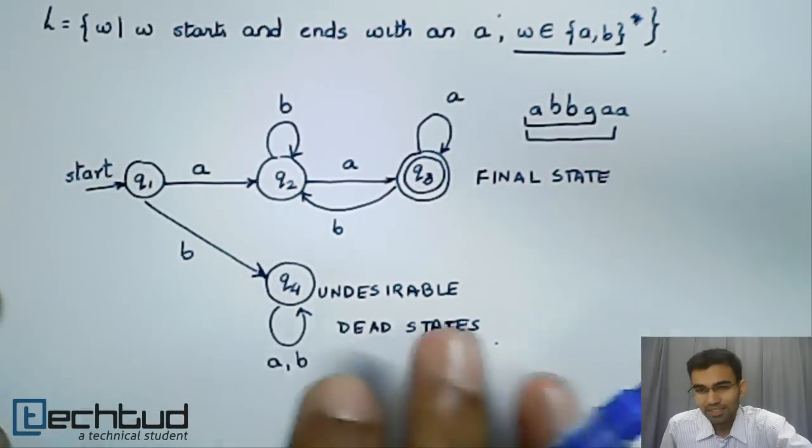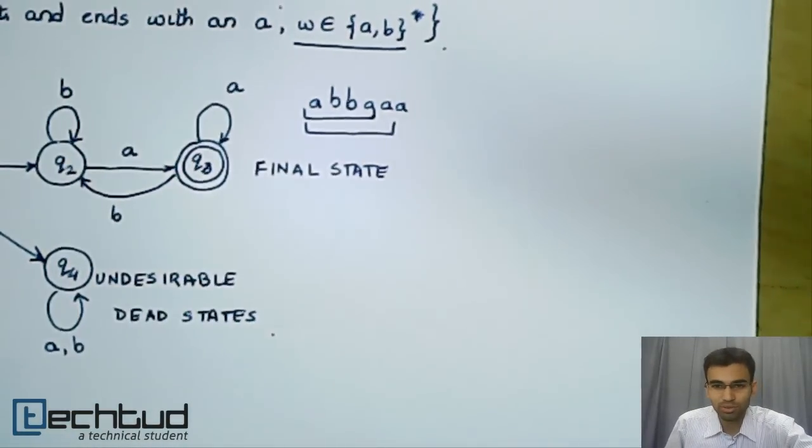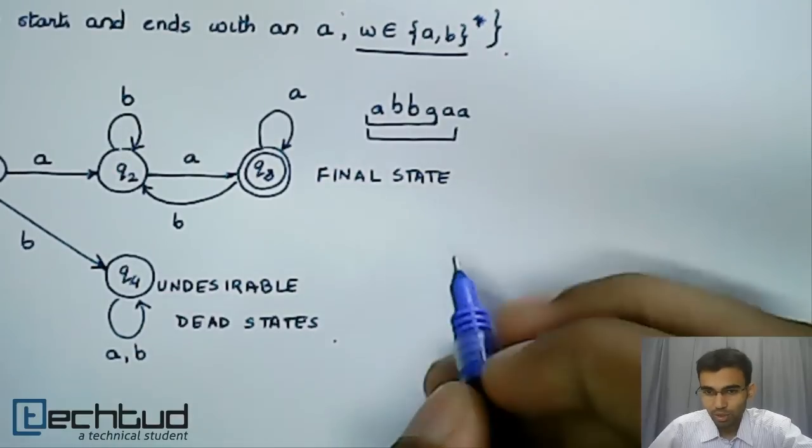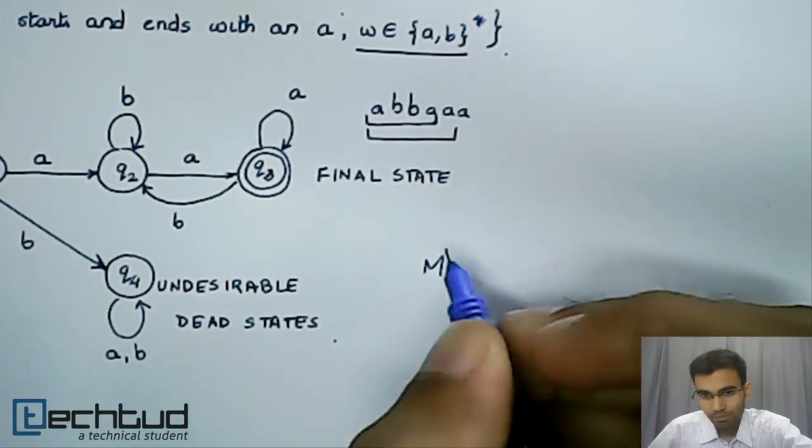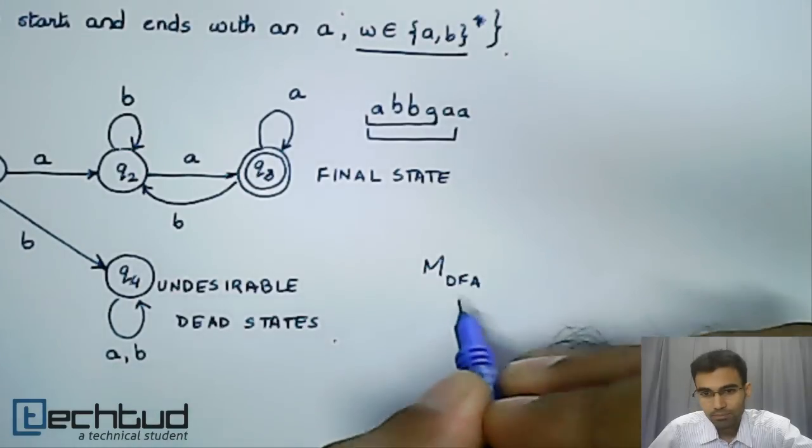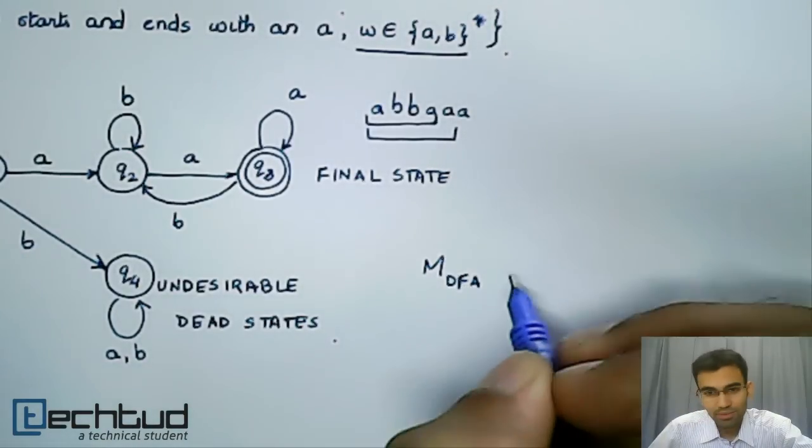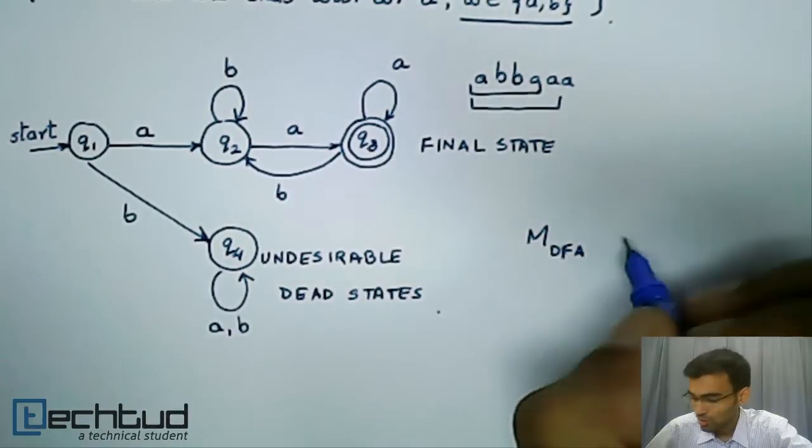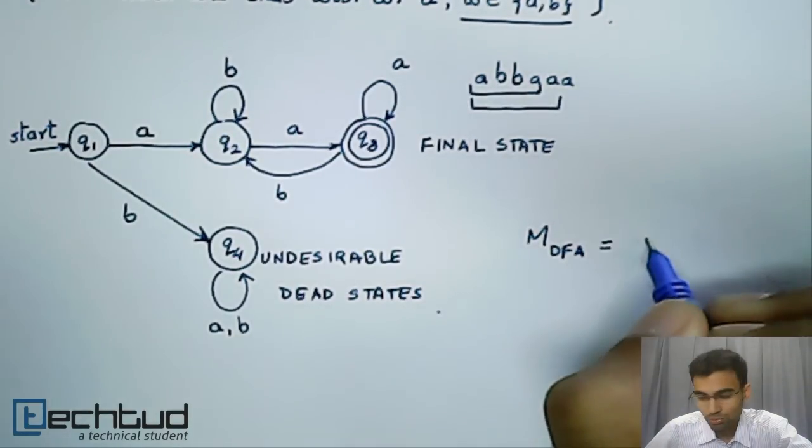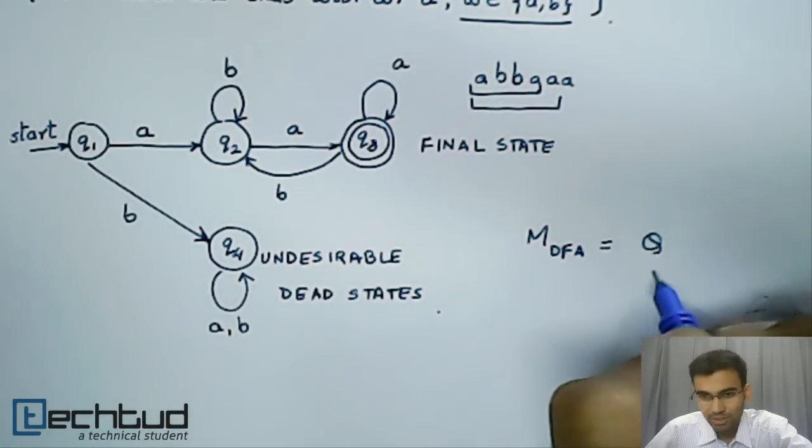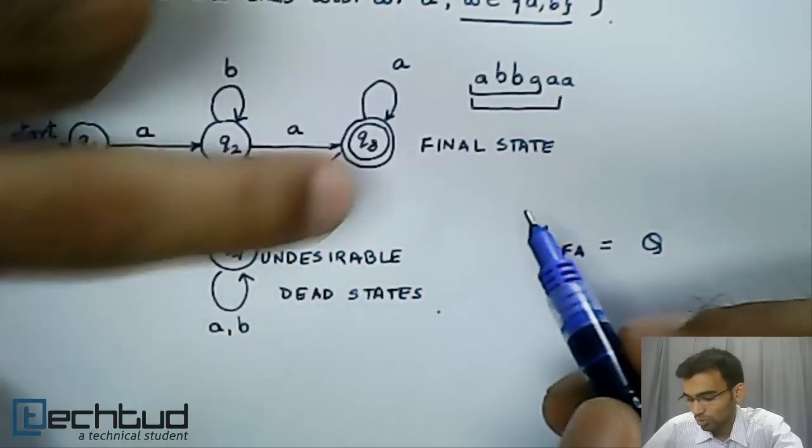Alright. So now, given this example, let's define what a finite automata will be. Finite automata M DFA is defined as Q, the set of states: Q1, Q2, Q3, Q4.